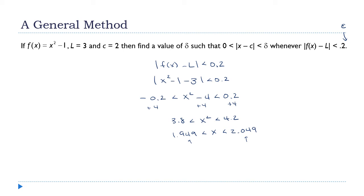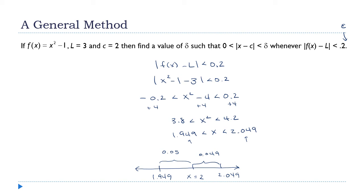Now I need to find delta. I've got 1.949 on the left and 2.049 on the right, with x = 2 somewhere in the middle. The distance from 2 to 2.049 is 0.049, and the distance from 2 to 1.949 is 0.051. The smaller one is 0.049, so delta = 0.049. That's the value of delta I was asked to find, and the question is done.